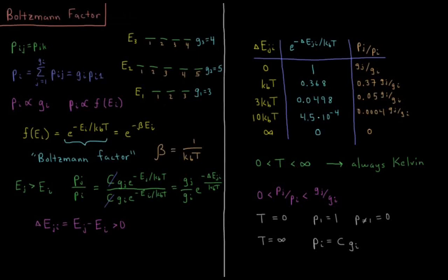This video will discuss the Boltzmann factor in statistical mechanics. From the previous video we saw that atoms and molecules are very small particles that obey the laws of quantum mechanics and thus have energy levels which are distinct individual states. There are quantized values for what the allowed energies are and what the allowed states are that the system could be in.